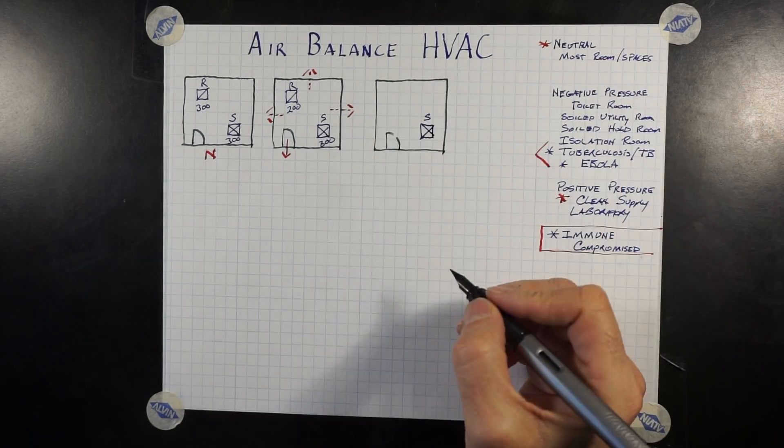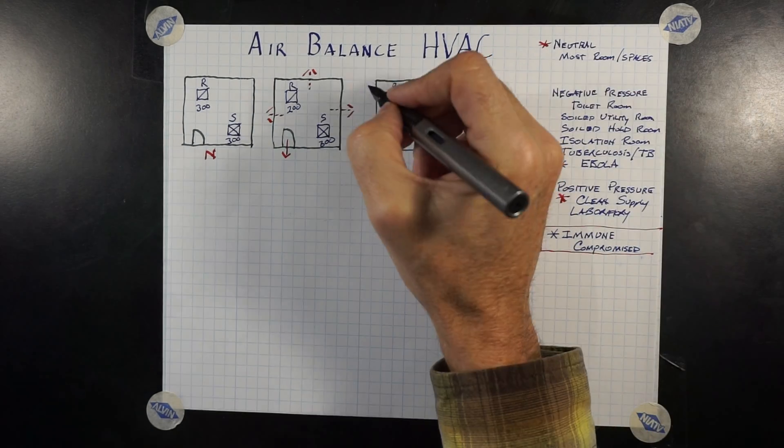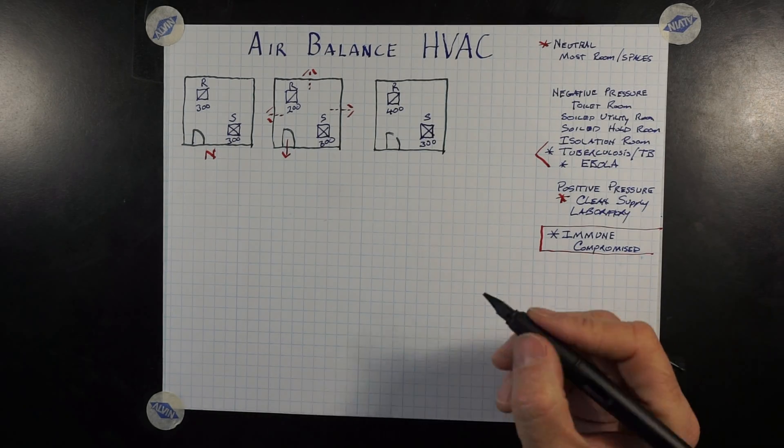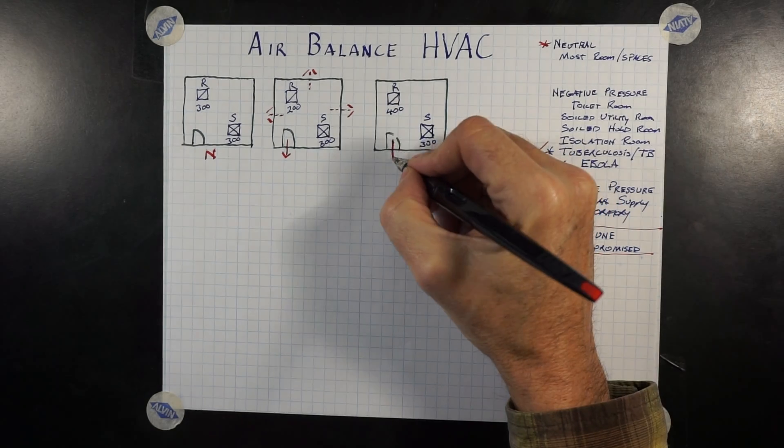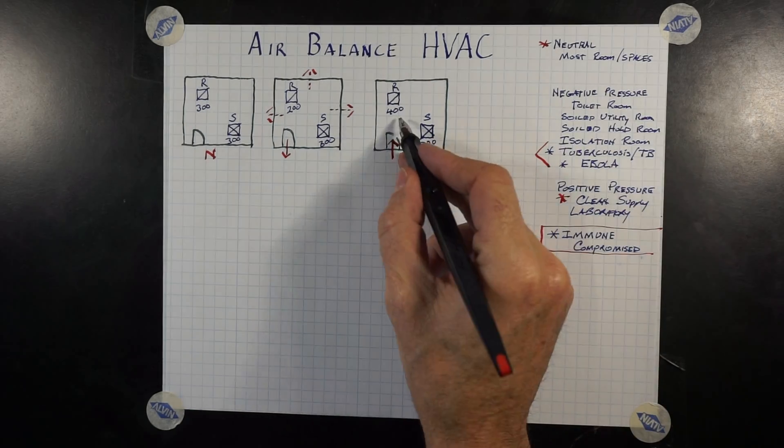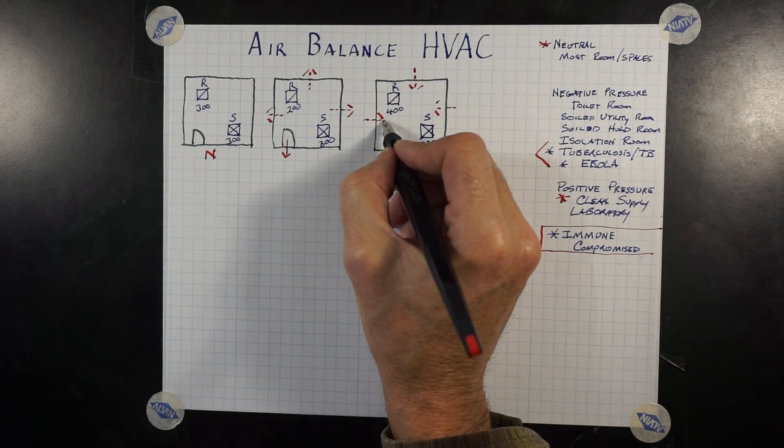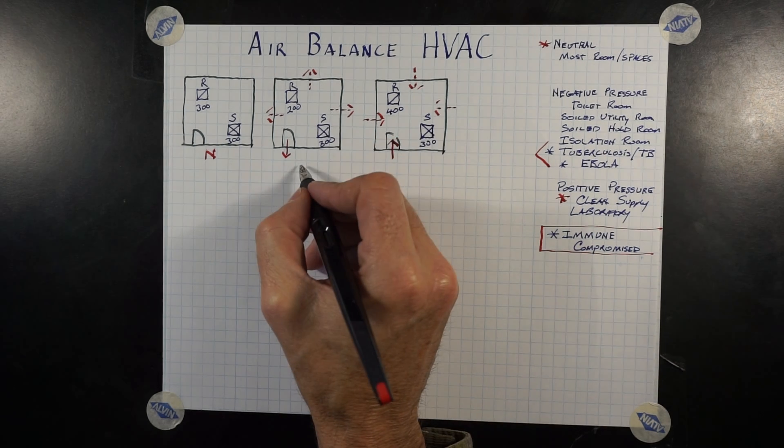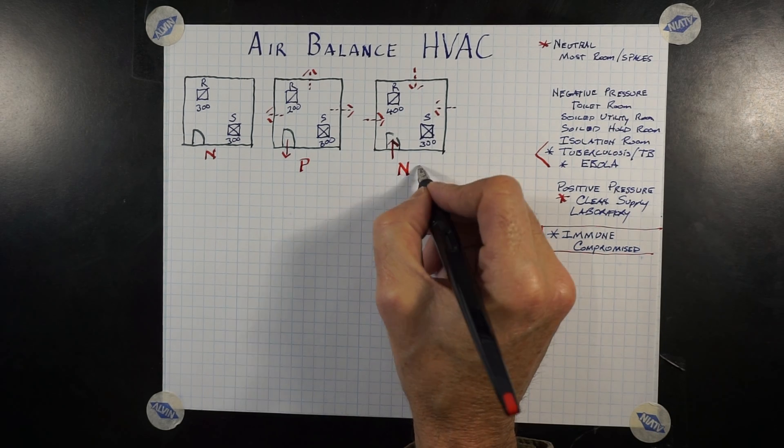With this room, we have a supply of 300 cubic feet of air coming into the room. We have a return of 400 cubic feet of air. That means there's more air being sucked out of the room than being supplied. So when the door is open, more air will flow through the door. When the door is shut, air will come in through the walls to make up for that additional cubic feet of air needed for the return side. So this room here is positive, and this room here is negative.